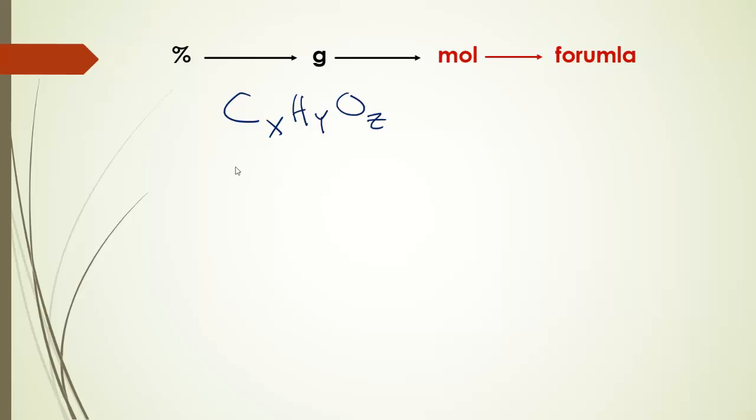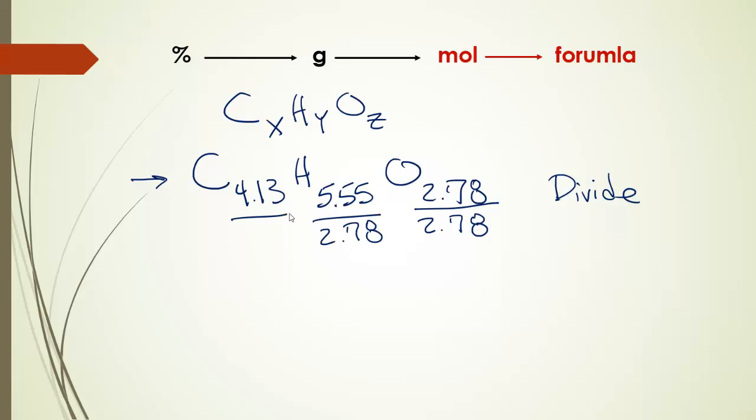5.61 grams of hydrogen, multiply that by its molecular weight. So, 1 mole over 1.01 grams of hydrogen. Grams of hydrogen cancel. And I get left with 5.55 moles of hydrogen. Last one. 44.4 grams of oxygen. 16 grams of oxygen. 1 mole of oxygen. Once again, I'm getting these numbers from the periodic table. And you get 2.78 moles of oxygen. Here I have my moles of all the different materials. This is important. The fact that I have moles of all the different materials.